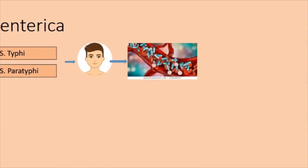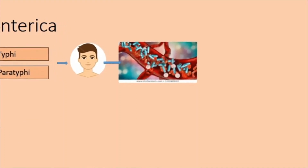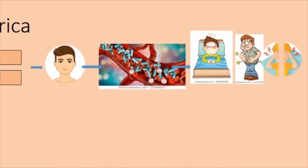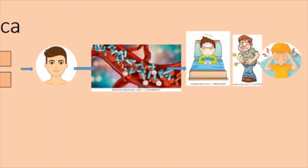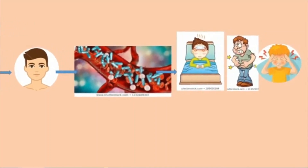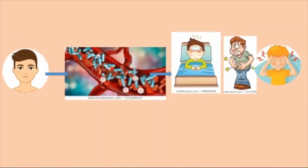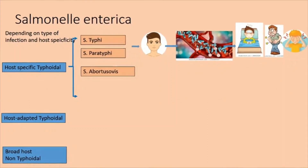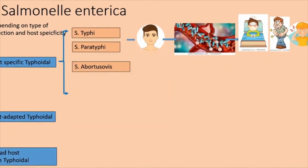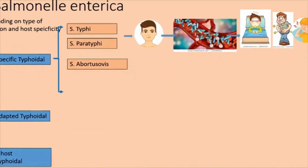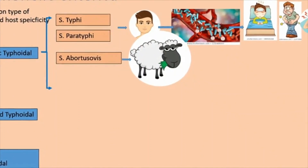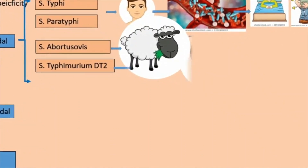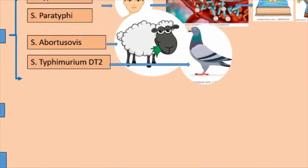In the human, from the intestine it gets into the blood vessels, and in the blood vessels it reaches different parts of the body and causes fever, abdominal cramps, and headaches. The other organism, Salmonella abortus ovis, as the name indicates, affects sheep. And Salmonella typhimurium DT2 affects pigs. Salmonella gallinarum affects chicken.